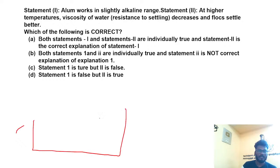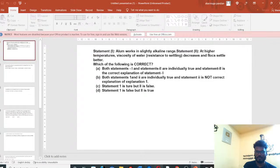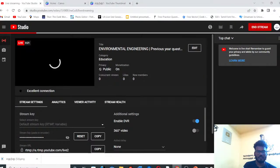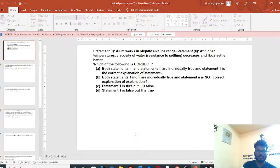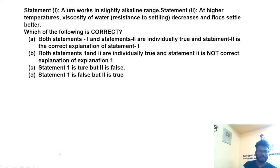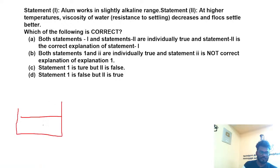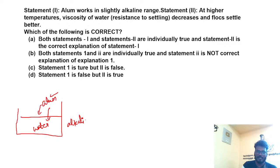There is water. In the water, I am adding alum. If you want to add alum to water, you can add it. This alum will work efficiently for efficient performance. The water will have a little alkaline nature. If you want to add alum, you should convert this water into alkaline.